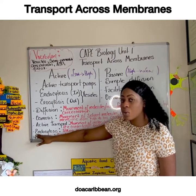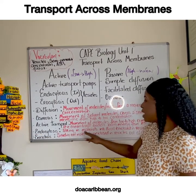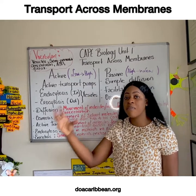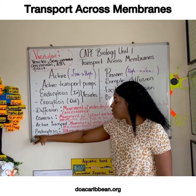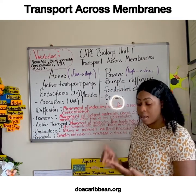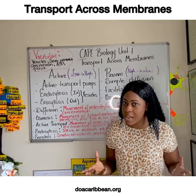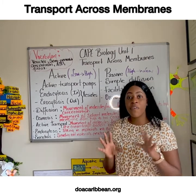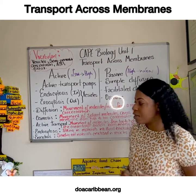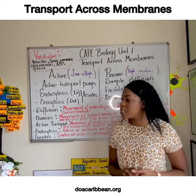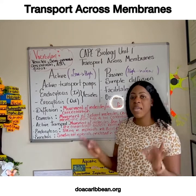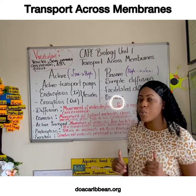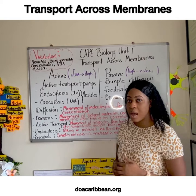Endocytosis is the taking in of materials into the cell enclosed in vesicles, and there are two types. Phagocytosis — phagocytes engulfing bacteria during an immune response is a primary example. Pinocytosis is the taking in of fluid into the cell.